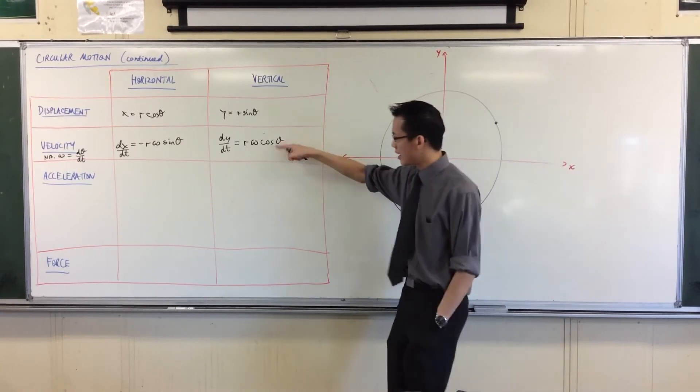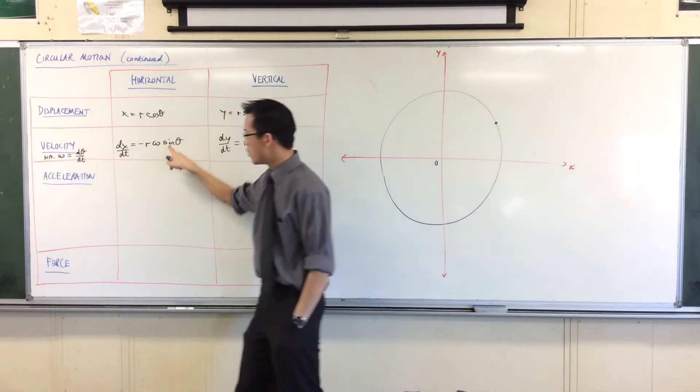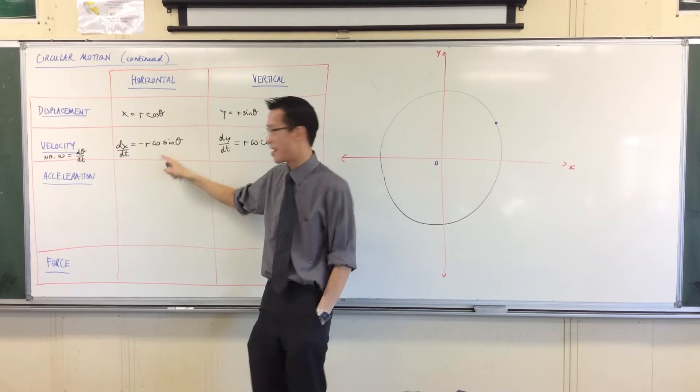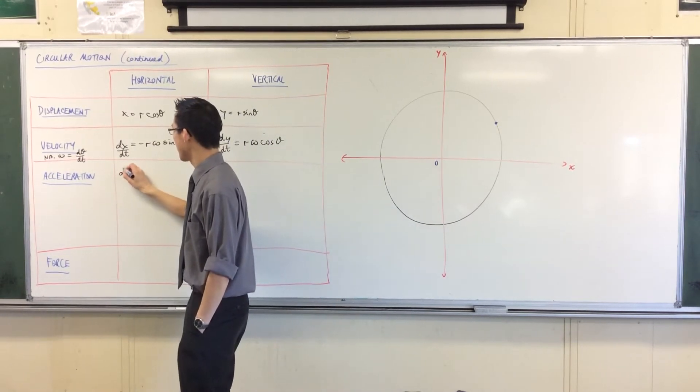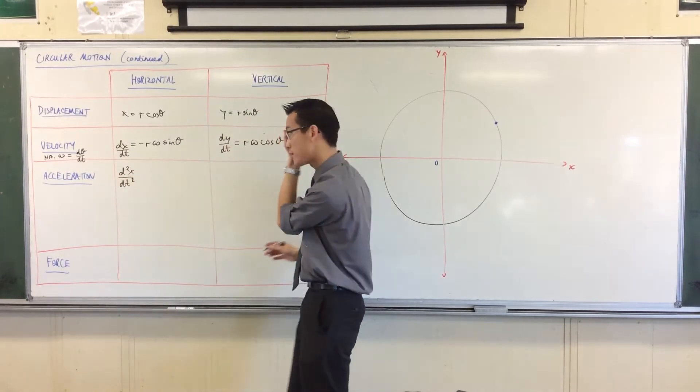When you're going down the ladder, and you're differentiating with respect to time again, you have to do the same kind of thing. You've got to introduce omega again, because you're still not with respect to time. So, you're getting, this is the second derivative, we'll do the x's first.